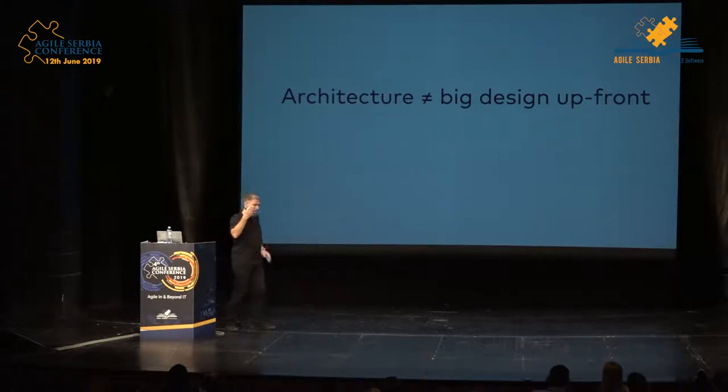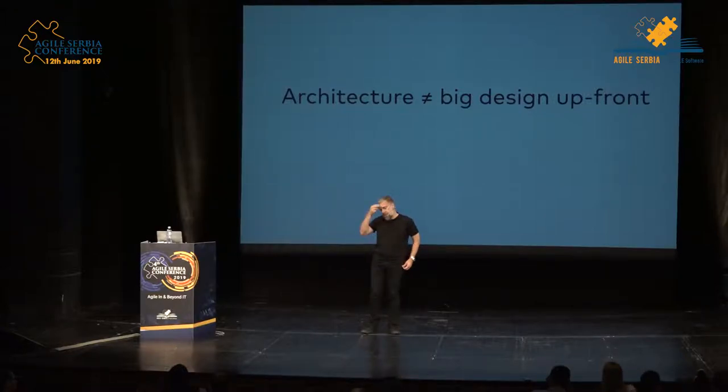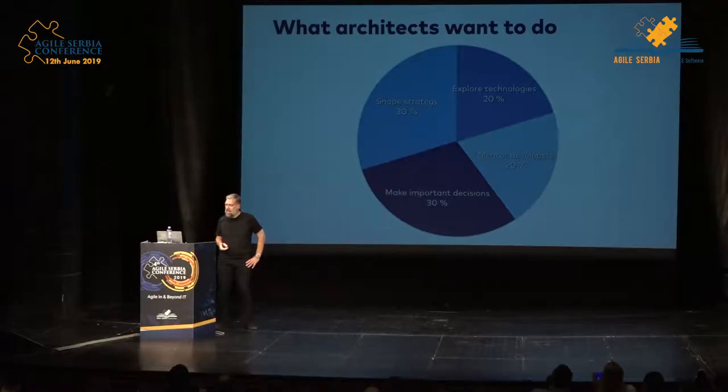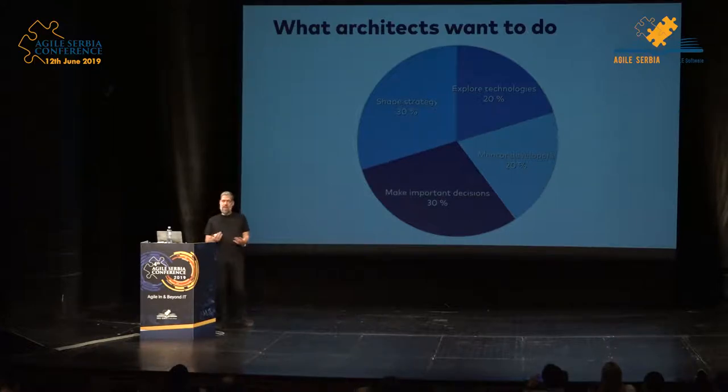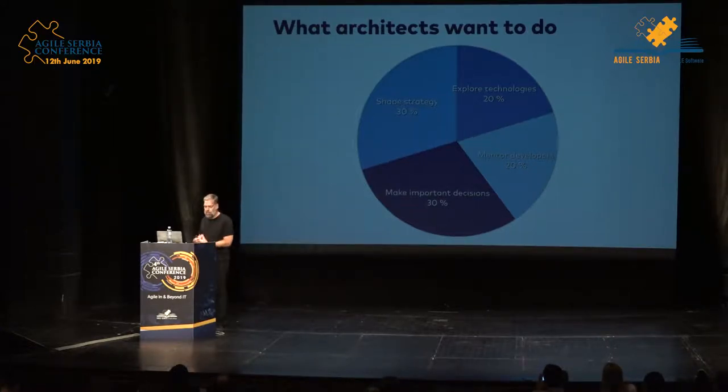Having said that, what is it that architects actually do, or think they do? You can see a conflict between a software architect's self-assessment and how they're perceived by others. A typical software architect — and I still self-identify as that — wants to make important decisions. They want to be involved with important stuff; that's what architects do. They want to be involved with strategy, shape strategy, explore new technologies, and mentor developers.